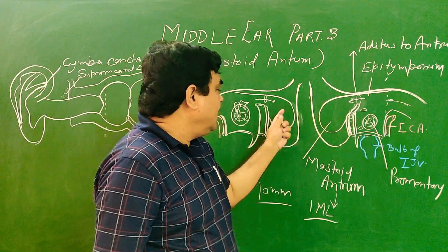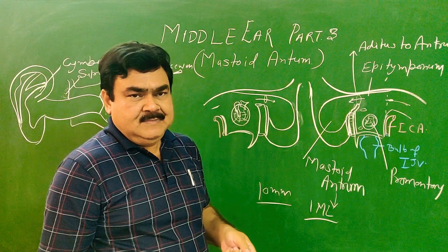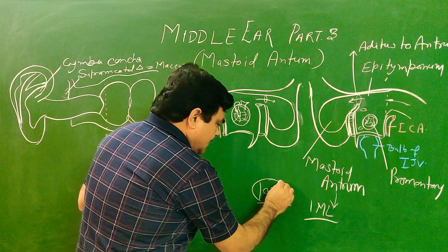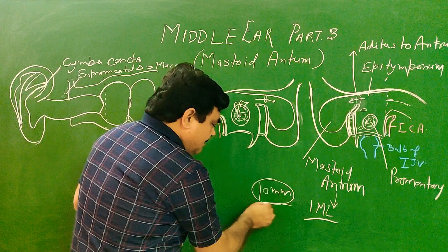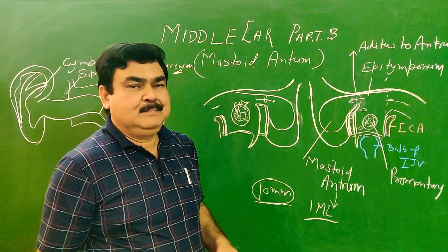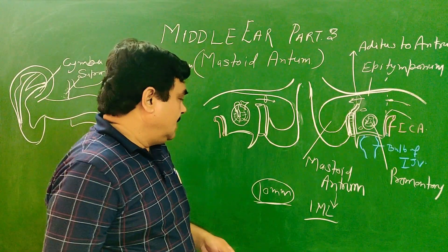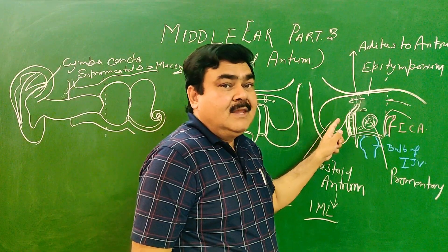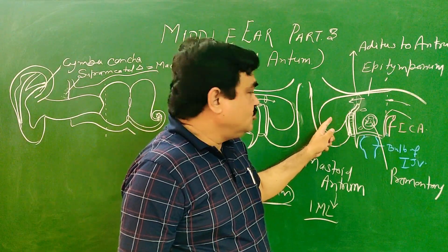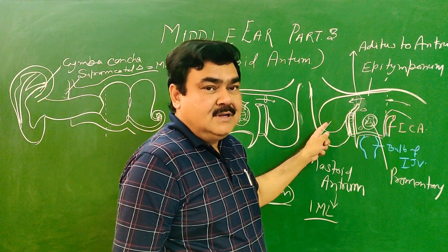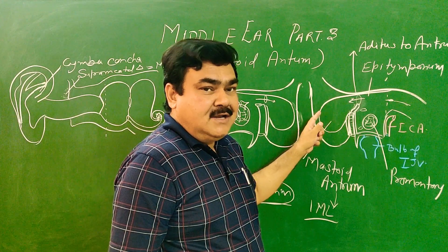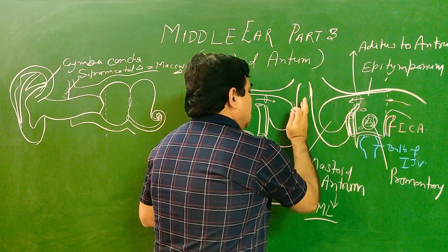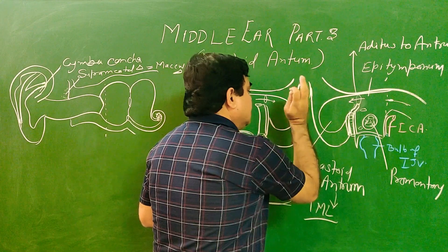It has a roof, a floor, an anterior wall, a posterior wall, and a lateral wall. Approximately all wall dimensions are about 10 millimeters. It is assumed that the mastoid antrum is fully developed at birth — it is of adult size.